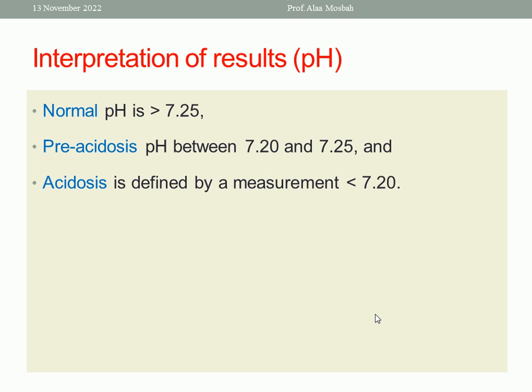What about interpretation of results? We have two items: pH and lactate. What is normal for pH? Normal pH should be above 7.25. The case is considered pre-acidosis if pH is between 7.20 and 7.25. And acidosis is defined by a measurement less than 7.20. This is as regards the pH.